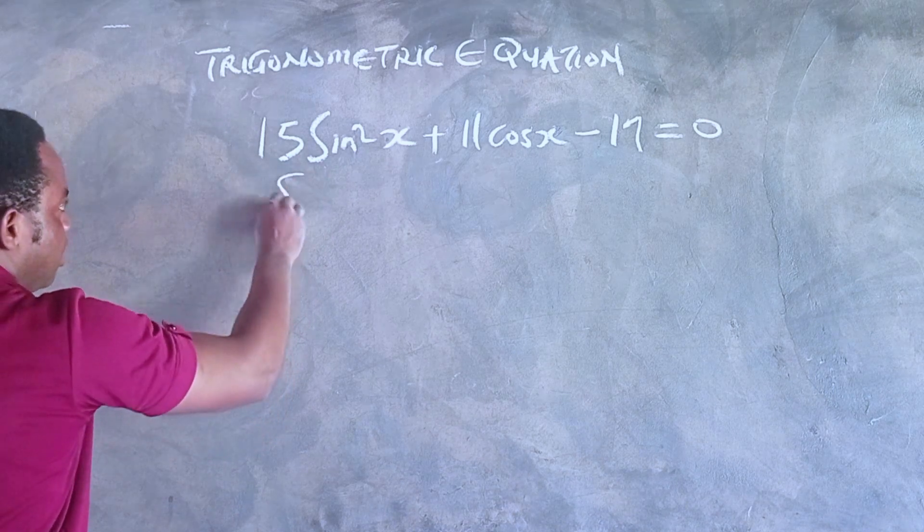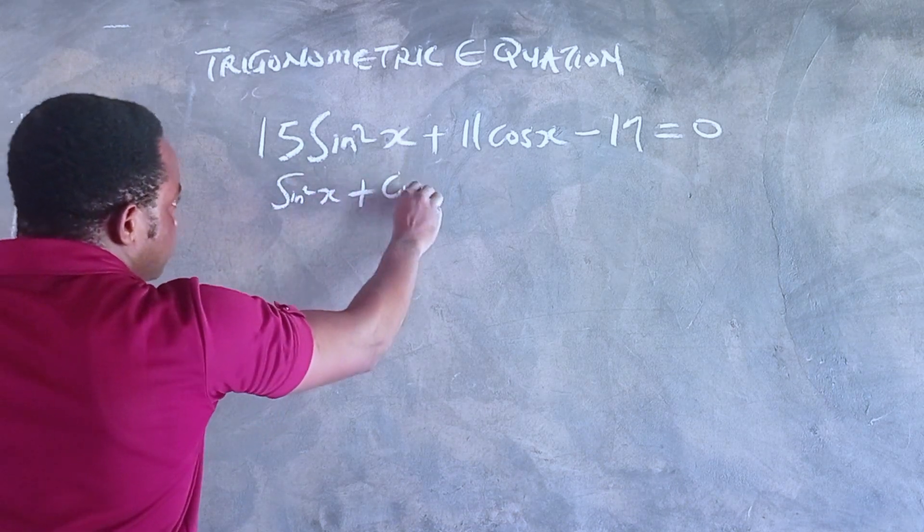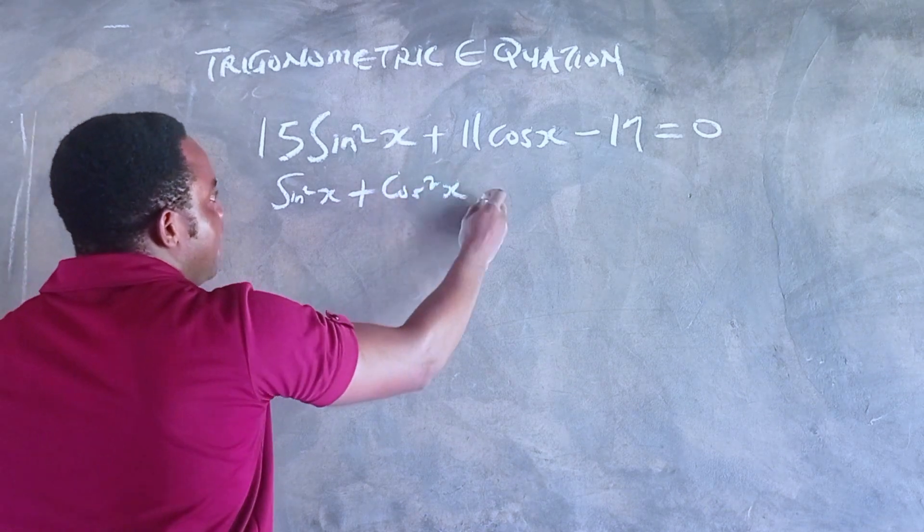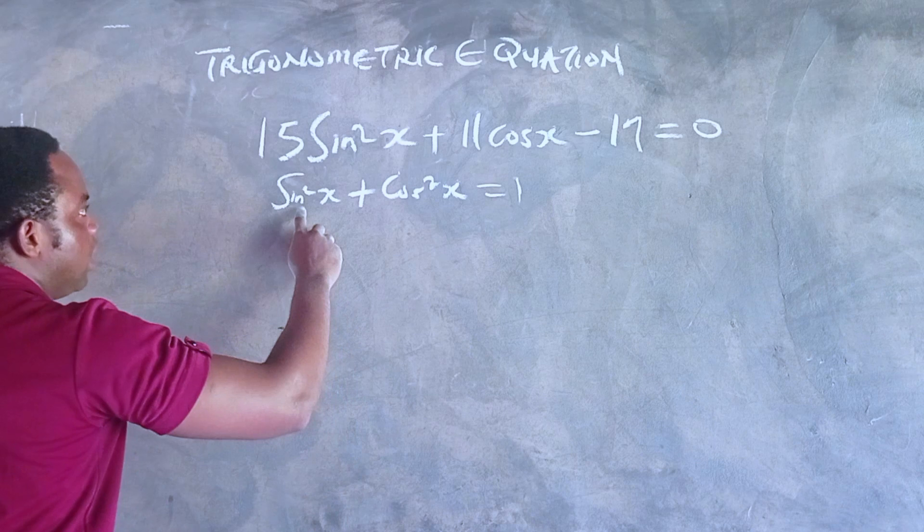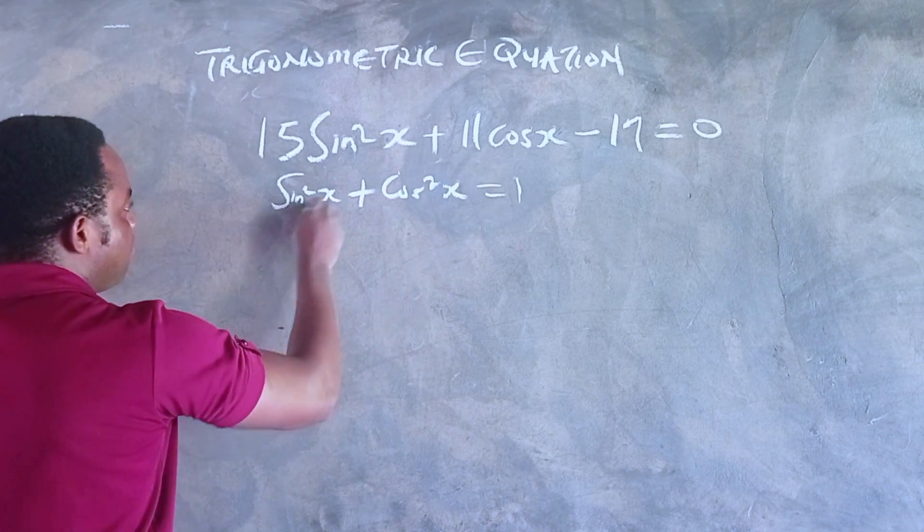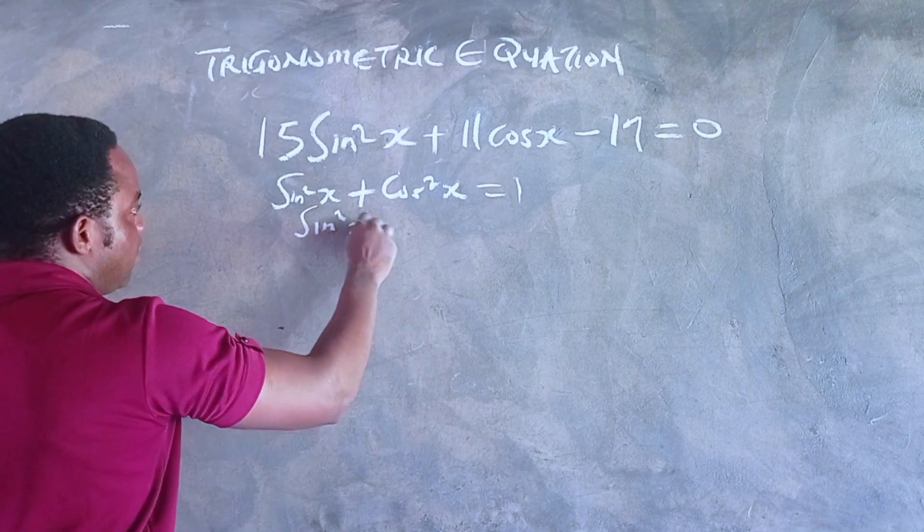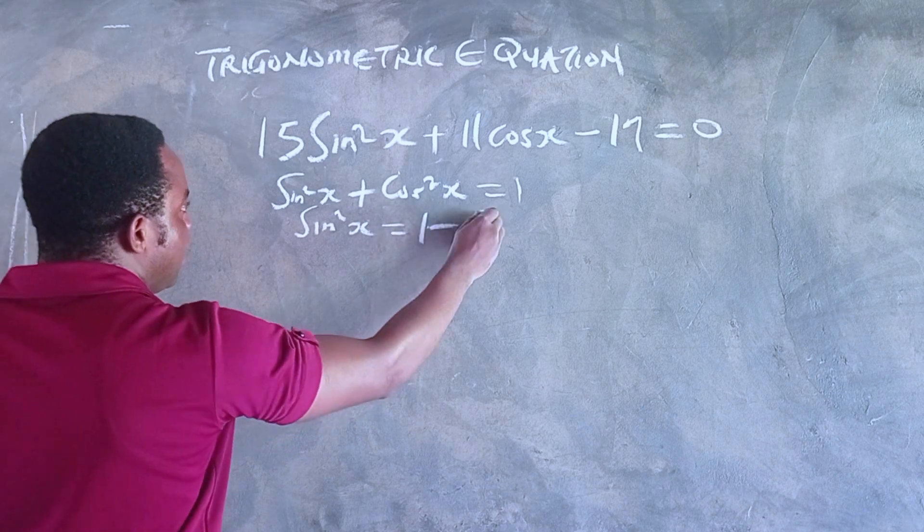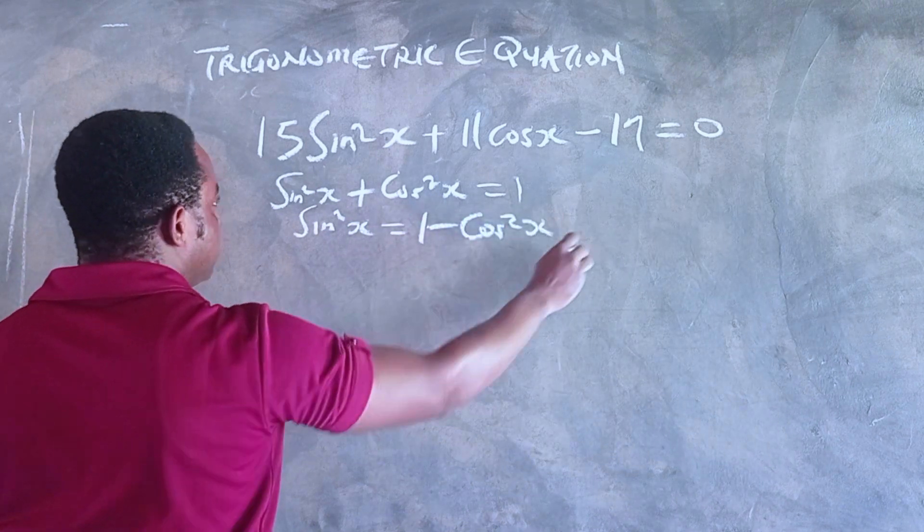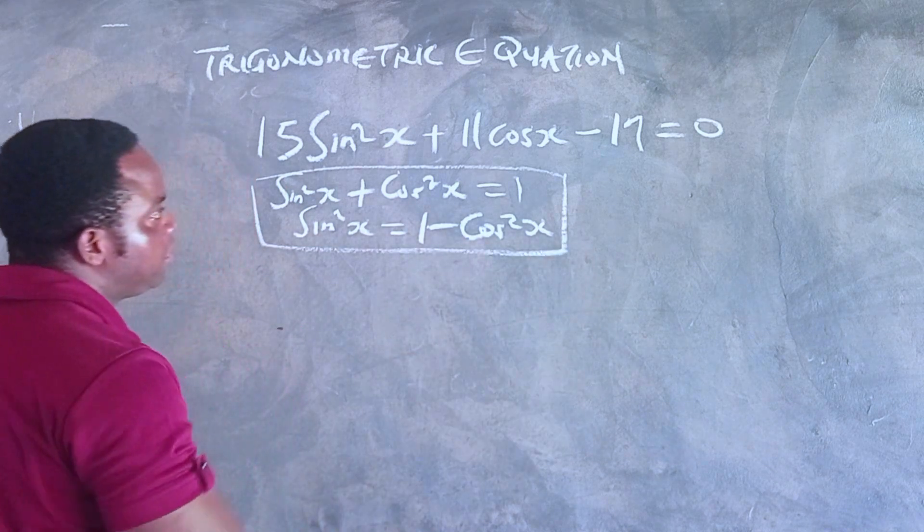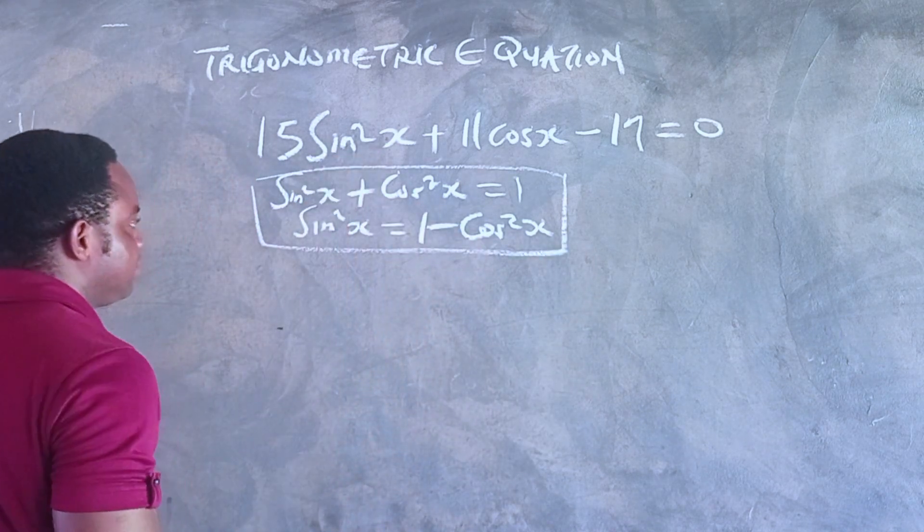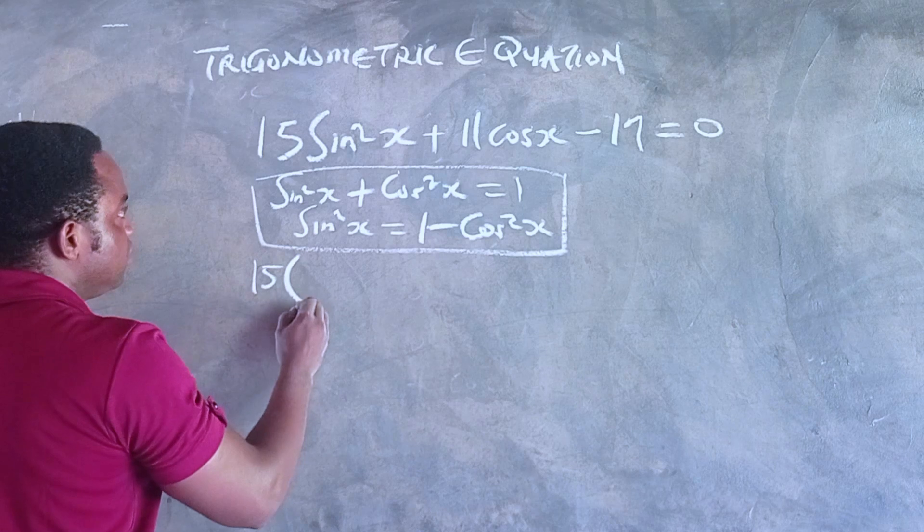You'll notice we have sin²x here. You probably remember that sin²x + cos²x = 1, one of the fundamental trigonometric identities. There are lessons on that on this channel; I'll put a link in the description. From here we can infer that sin²x = 1 - cos²x. Let's simply go on and put 1 - cos²x in place of sin²x.